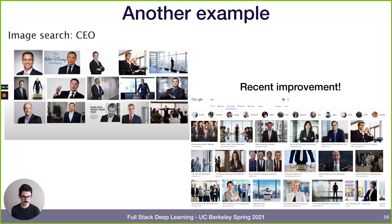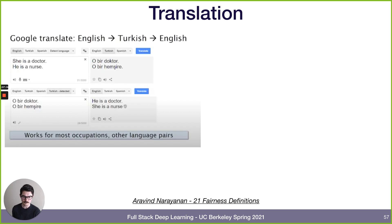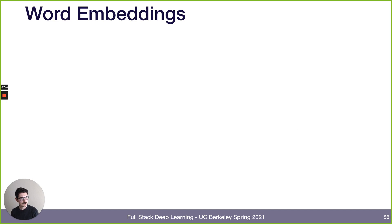Another example is gender bias in language. In Google Translate, someone typed 'She's a doctor, he's a nurse,' translated to Turkish — which has no gendered pronouns — then back to English. It became 'He is a doctor and she is a nurse.' This works for many occupations. A recent improvement: translating a gender-neutral Turkish sentence now gives a choice rather than a single gendered output, which educates the user. This kind of gender bias can also be seen in word embeddings.